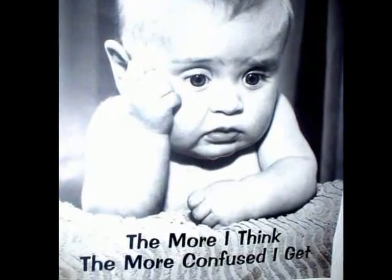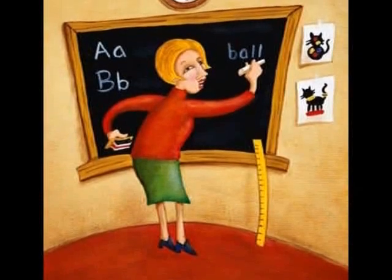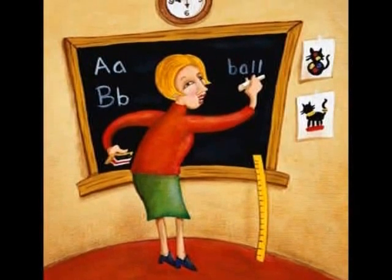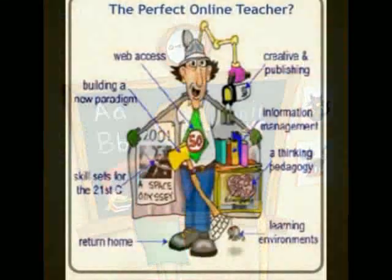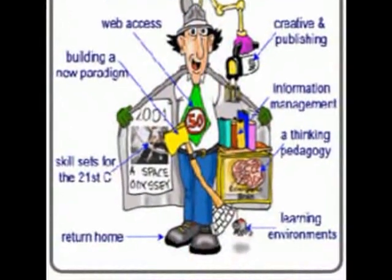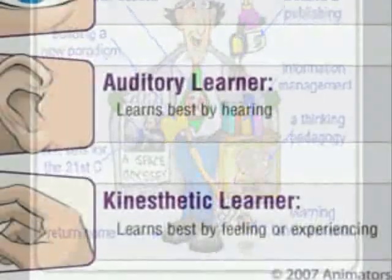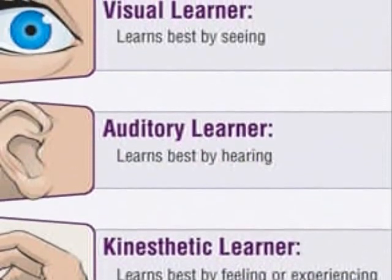Why are students in the classroom so confused? All students are different on the inside just as they are on the outside, meaning we should teach students differently for different types of learners. Every teacher needs to have just a few tricks up their sleeves. What are the different types of learners that we're trying to teach to?